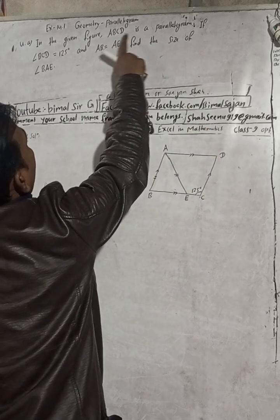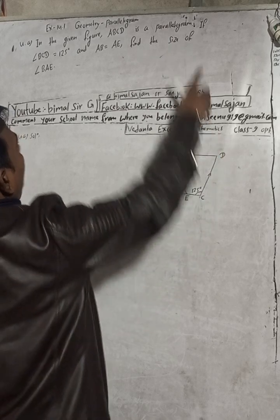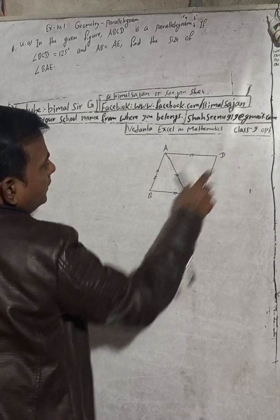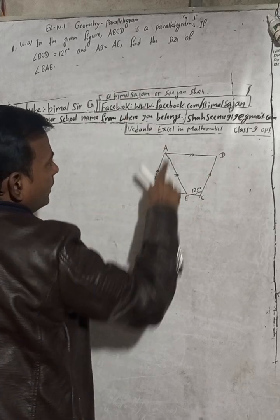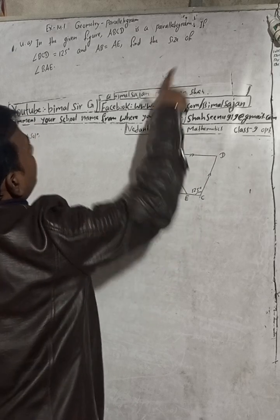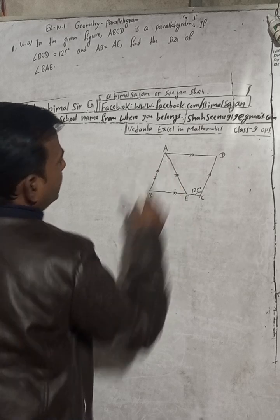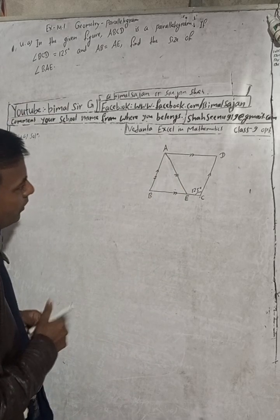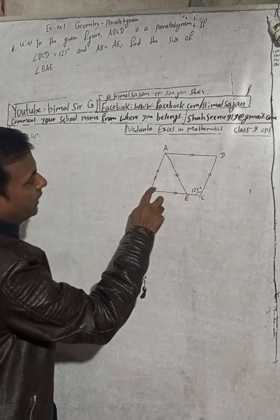The question states: in the given figure, ABCD is a parallelogram. Angle BCD is 125 degrees, and AB is equal to AE. We have to find the size of angle BAE.